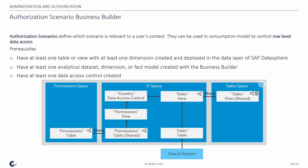The authorization scenario in the business builder belongs to the business layer and is about configuring how your data access control should work. Authorization scenarios define which scenario is relevant to the user context and can be used in consumption models to control row-level data access. Prerequisites: you must have at least one table or view with at least one dimension created and deployed in the data layer of SAP Data Sphere, at least one analytical data set, dimension, or fact model created in the business model, and you must have a data access control — that is the baseline.